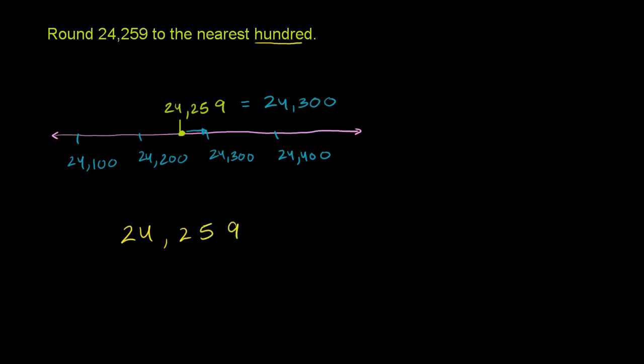So you look at the hundreds place. This is the hundreds place right here. And when we round, that means we don't want any digits, we only want zeros after the hundreds place. So what you do is you look at the place one less than the place you're rounding to. This is the hundreds place. So you look at the five right there.